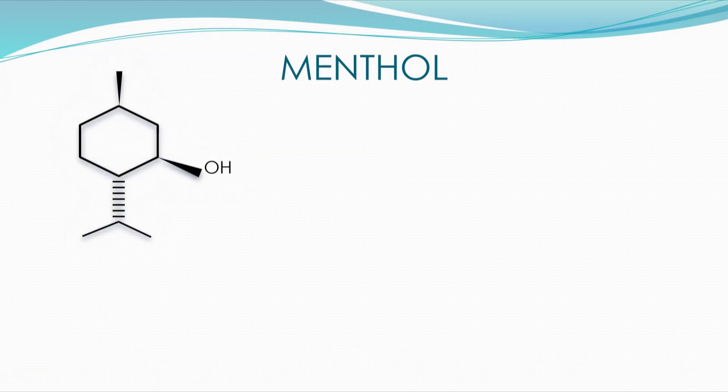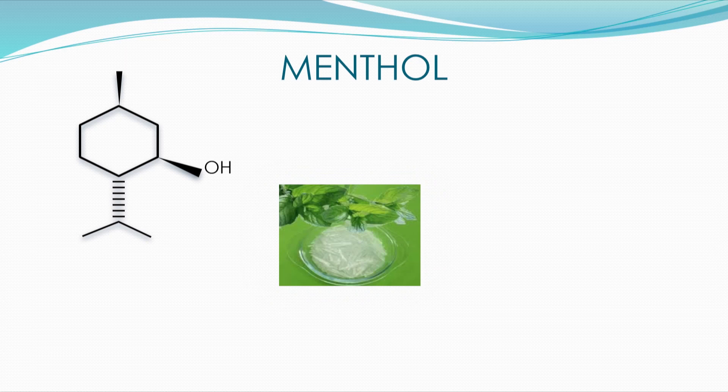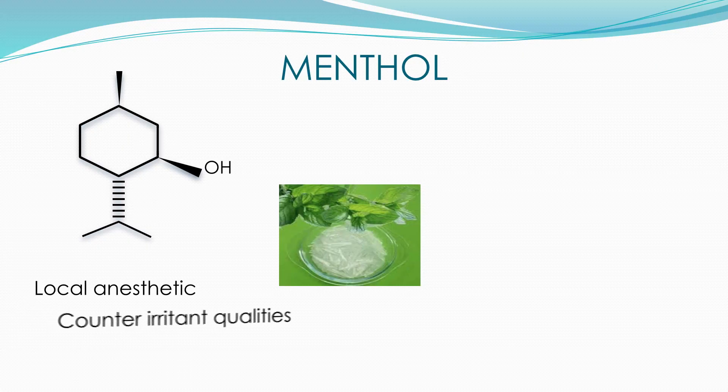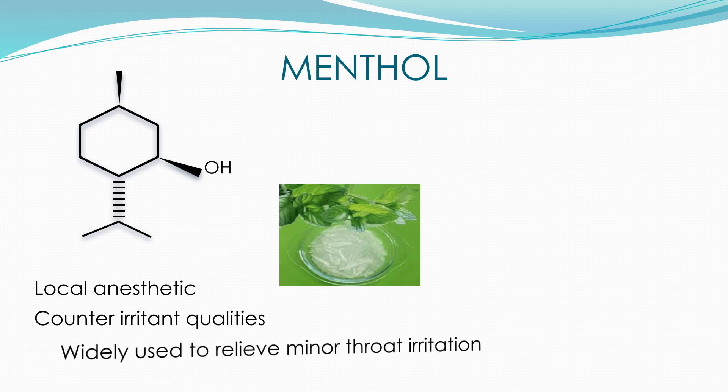One of the examples of terpenes is menthol. It is a cyclic oxygenated monoterpene. As you can see, it has a cyclic structure with an OH group. It is an organic compound made synthetically or obtained from corn mint, peppermint, or other mint oils. It is a waxy, crystalline substance, clear or white in colour, which is solid at room temperature. Menthol gives short-term relief of minor sore throat and minor mouth or throat irritation as it is a local anaesthetic. It is also used as a decongestant for chest and sinuses.